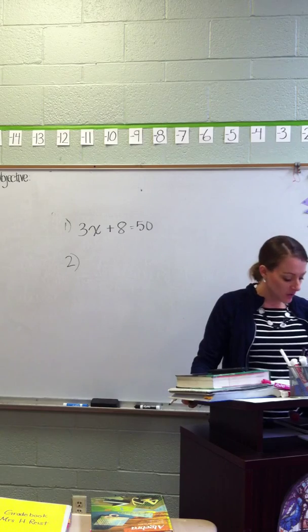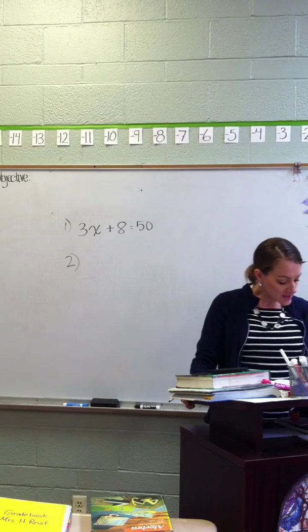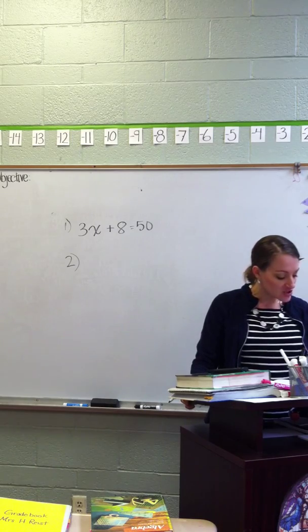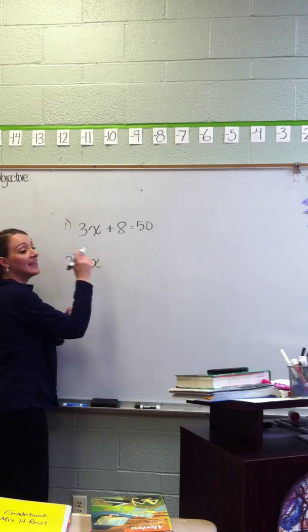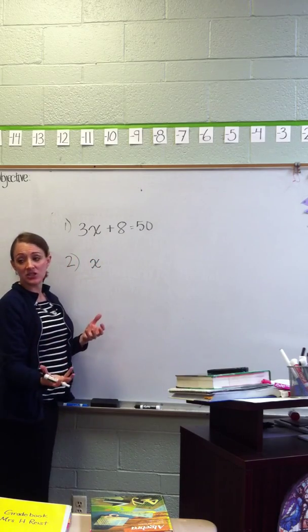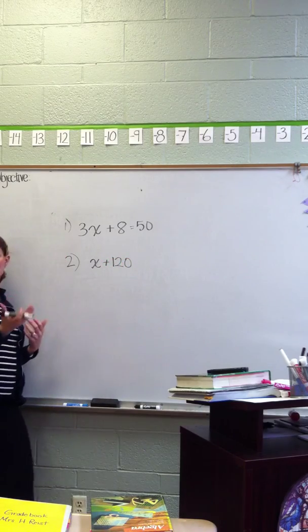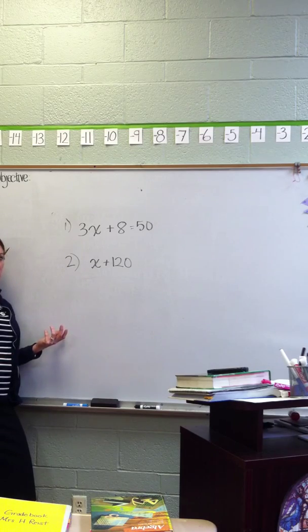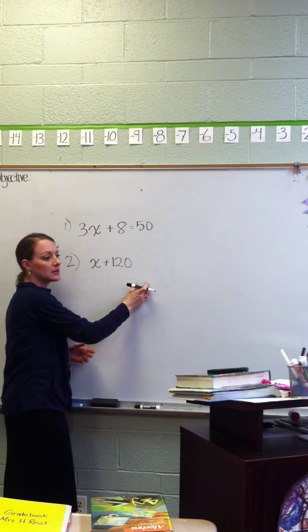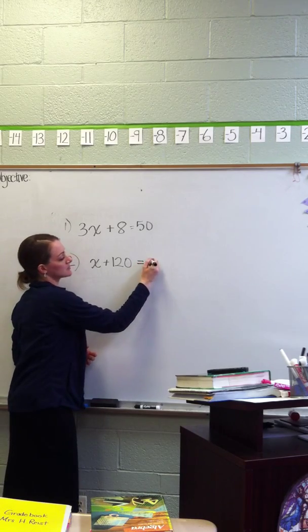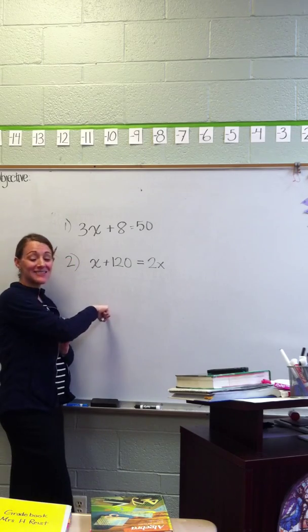If you add 120 to last year's enrollment, you add twice this year's enrollment, find last year's enrollment. So, my enrollment is X. If I add 120 to it, it is twice this year's. Okay, so it's 2X. What's my sign in between? What do you mean? Equals 2X. This one was hard. It was kind of tricky.